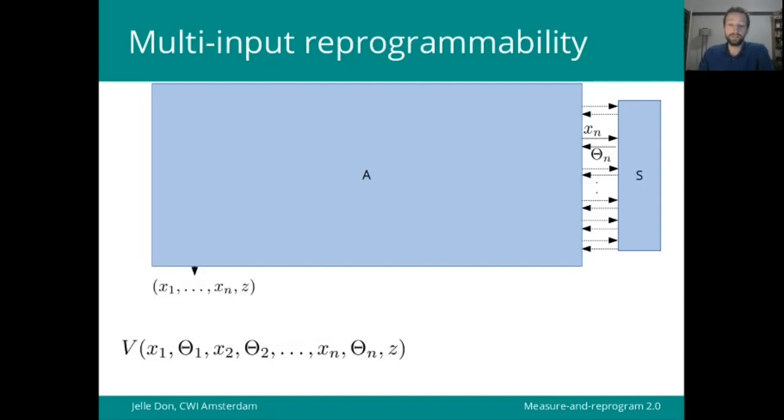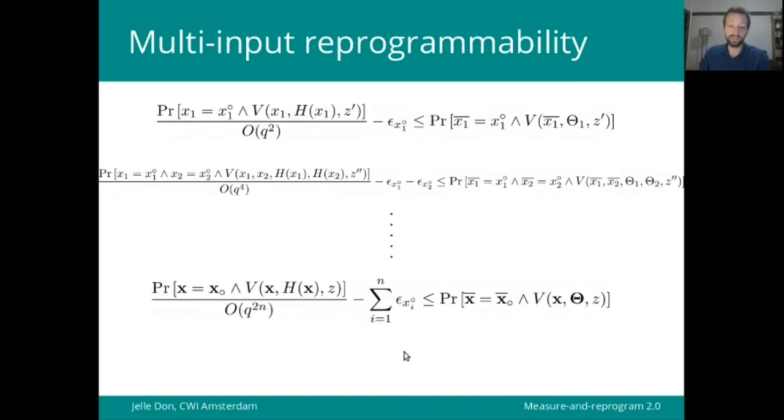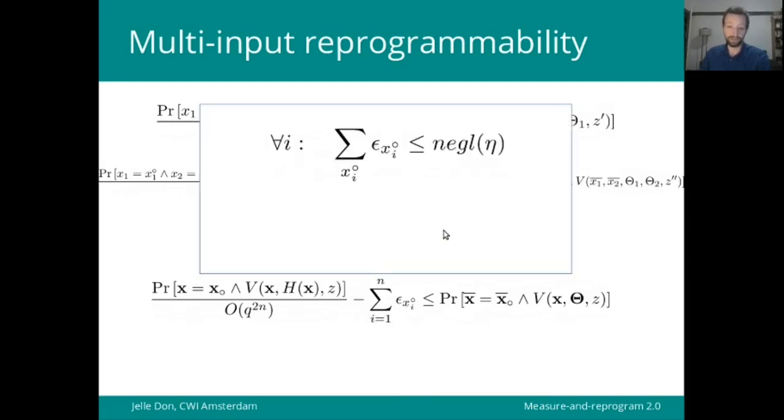And continuing for n times, we will eventually get an algorithm which outputs x1 up to xn and z such that the predicate V checks out with respect to theta1 up to theta n. But what is now the loss factor that we get from this inductive application? From the first application, we get a q squared loss as well as this additive error term. In the second application, we're up to q to the fourth and we have two error terms. So continuing the pattern, we indeed get this promised q to the power 2n multiplicative loss and a sum of n error terms.